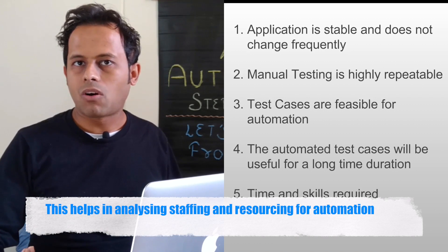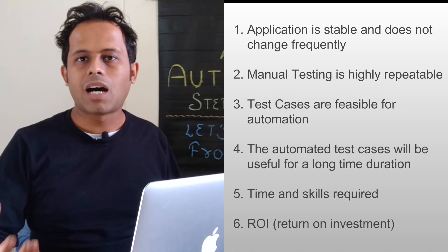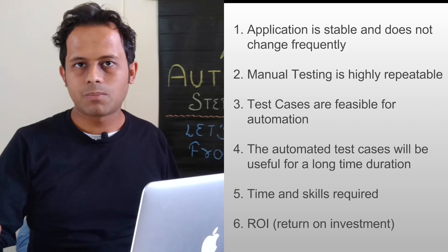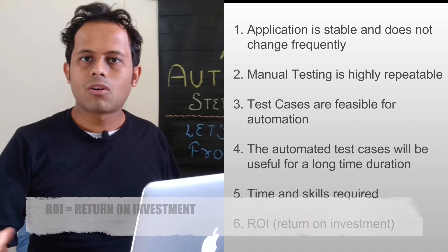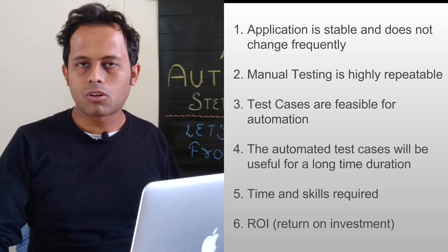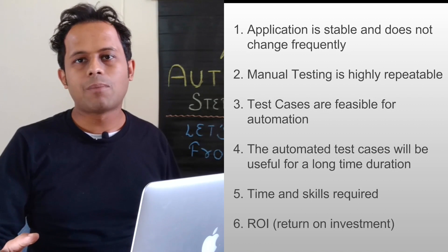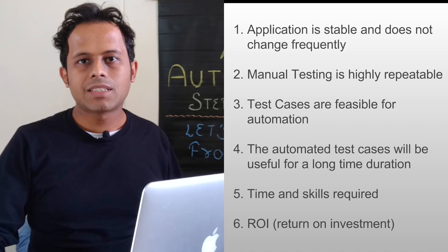And the sixth thing is ROI which is return of investment. So whenever we decide on automation we always do this analysis that what will be the cost, effort and time required for automation and then what will we get out of it after automation is done.